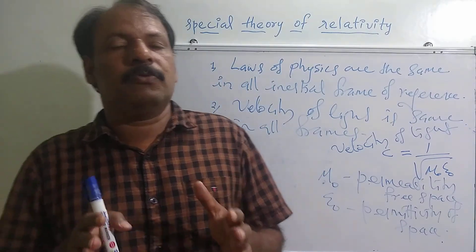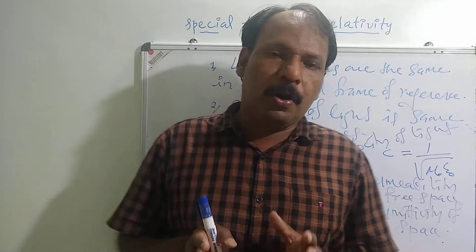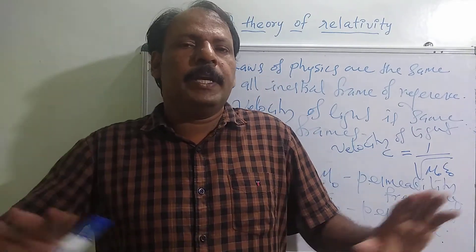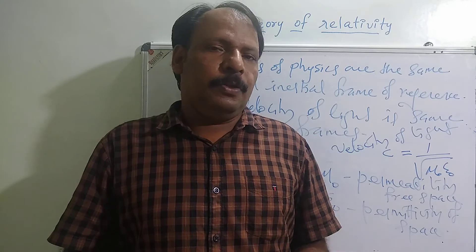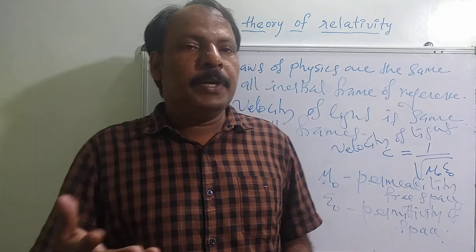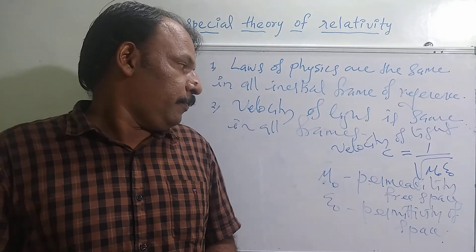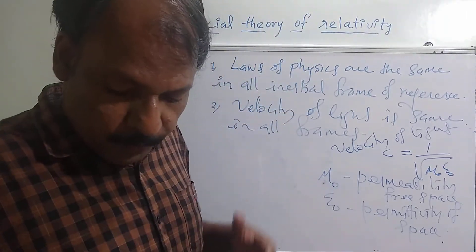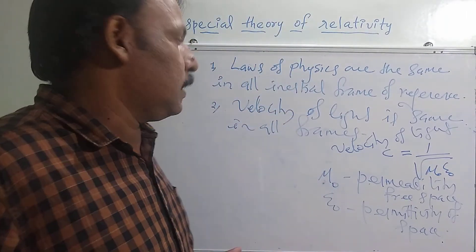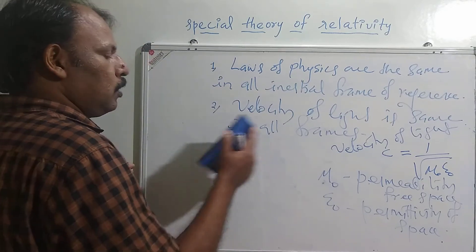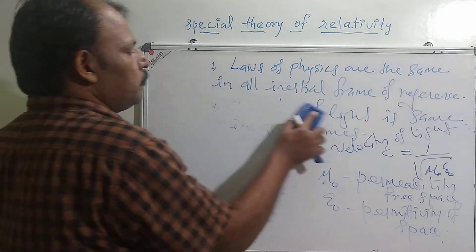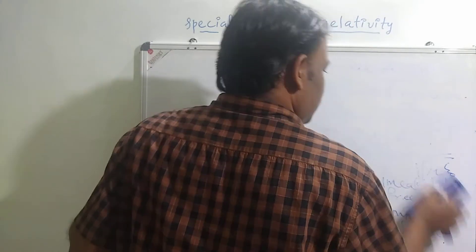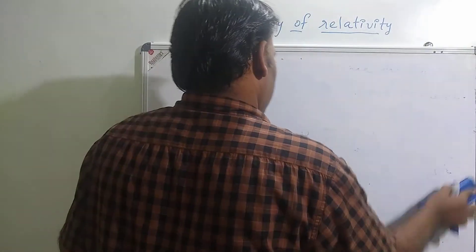When you move from one coordinate system to another, there should be no change in the velocity of light — it should be constant in all frames of reference. Now we discuss the coordinate transformation. We will transform from one coordinate system into another. First we will take the Galilean transformation.